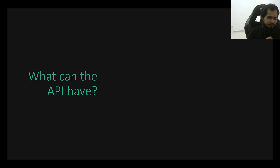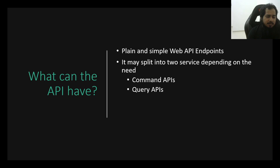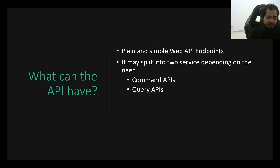The API can actually have a simple web API endpoint — nothing else. But it can have more, depending on our need. It can handle commands like order create, order update, pay, and similar endpoints. It can also handle queries like get sales data for today, get customer history for this ID.